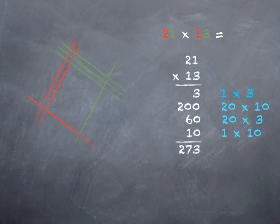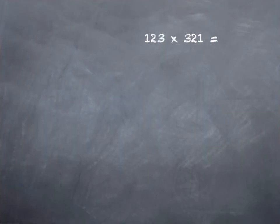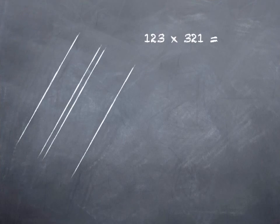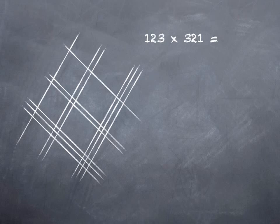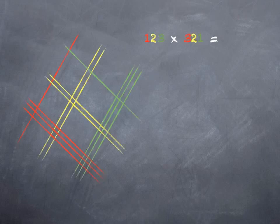Some of you may recognize that as the partial products algorithm you probably learned in school at some point. If we want a little bit trickier problem, one that requires regrouping, we can try 123 times 321. There's three hundreds, two tens, and one one. And let's color code them again. Hundreds, tens, ones.